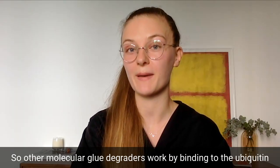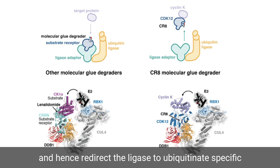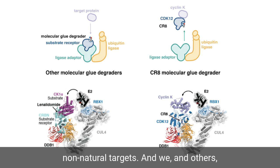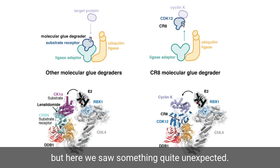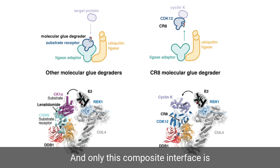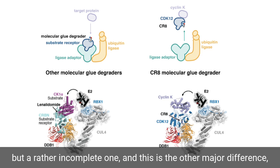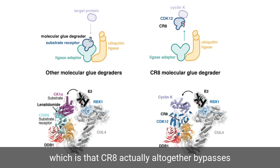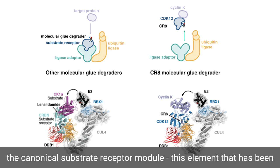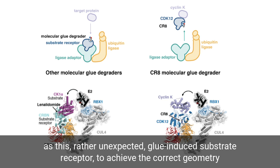Other molecular glue degraders work by binding to the ubiquitin ligase, specifically to its substrate receptor modules, and hence redirect the ligase to ubiquitinate specific non-natural targets. We and others thought that all molecular glue degraders work this way, but here we saw something quite unexpected. CR8 actually binds on the side of the target and not the ligase, and only this composite interface is then able to recruit the ubiquitin ligase complex — but a rather incomplete one. CR8 altogether bypasses the canonical substrate receptor module and instead uses CDK12, a binding partner of the target, as an unexpected glue-induced substrate receptor to achieve the correct geometry for cyclin K ubiquitination.